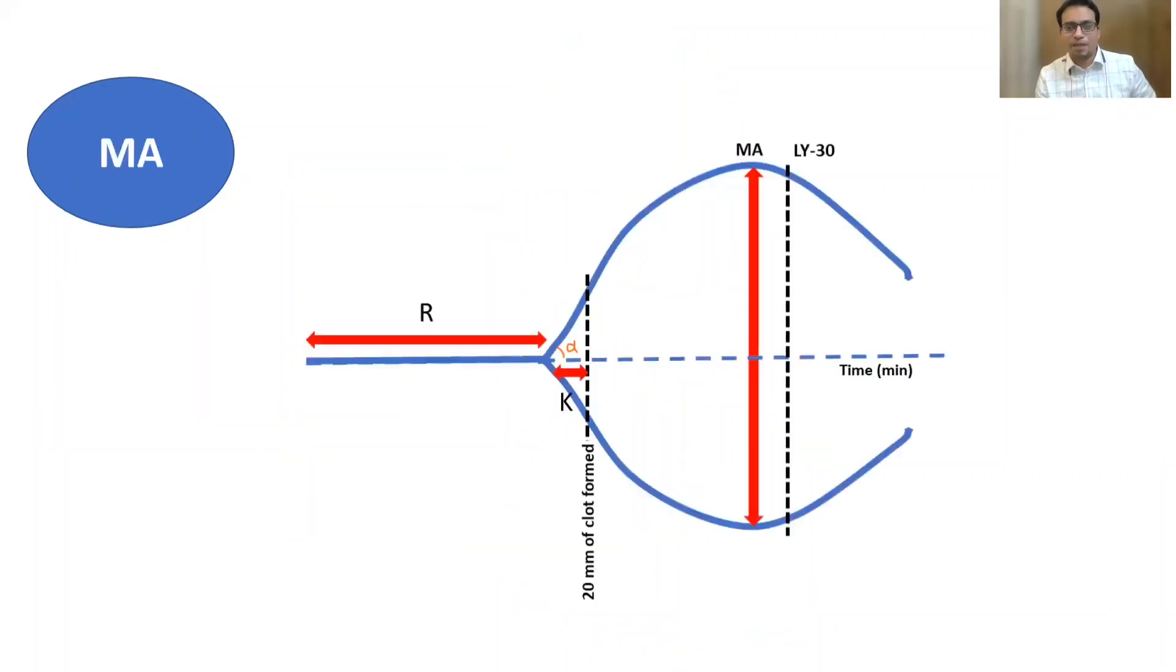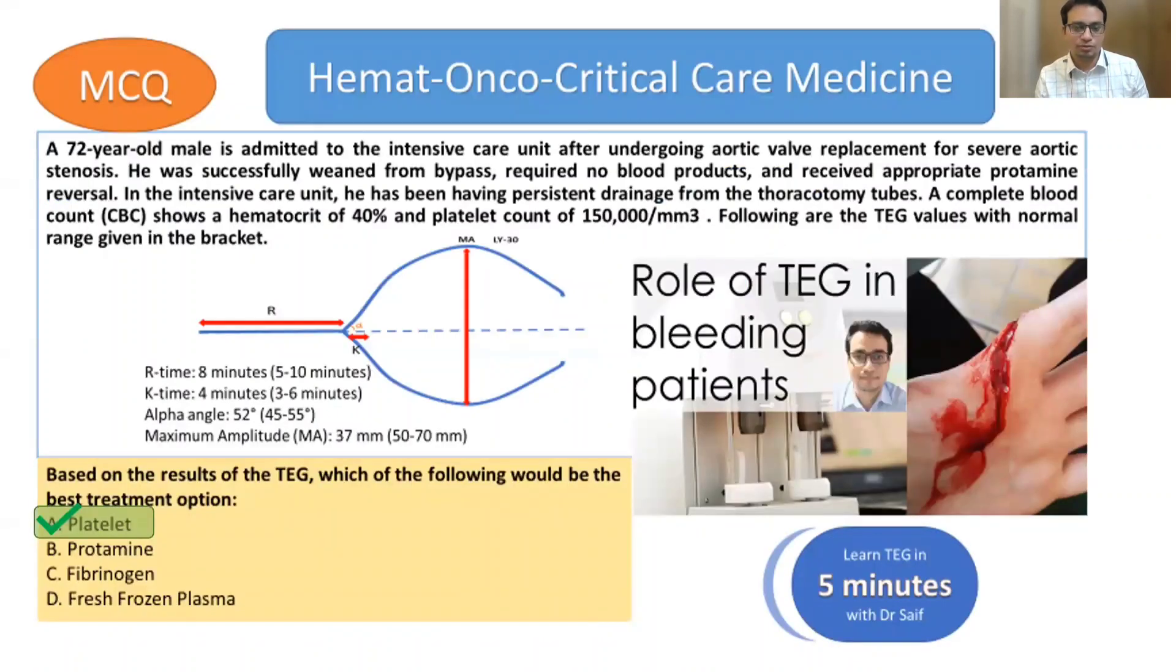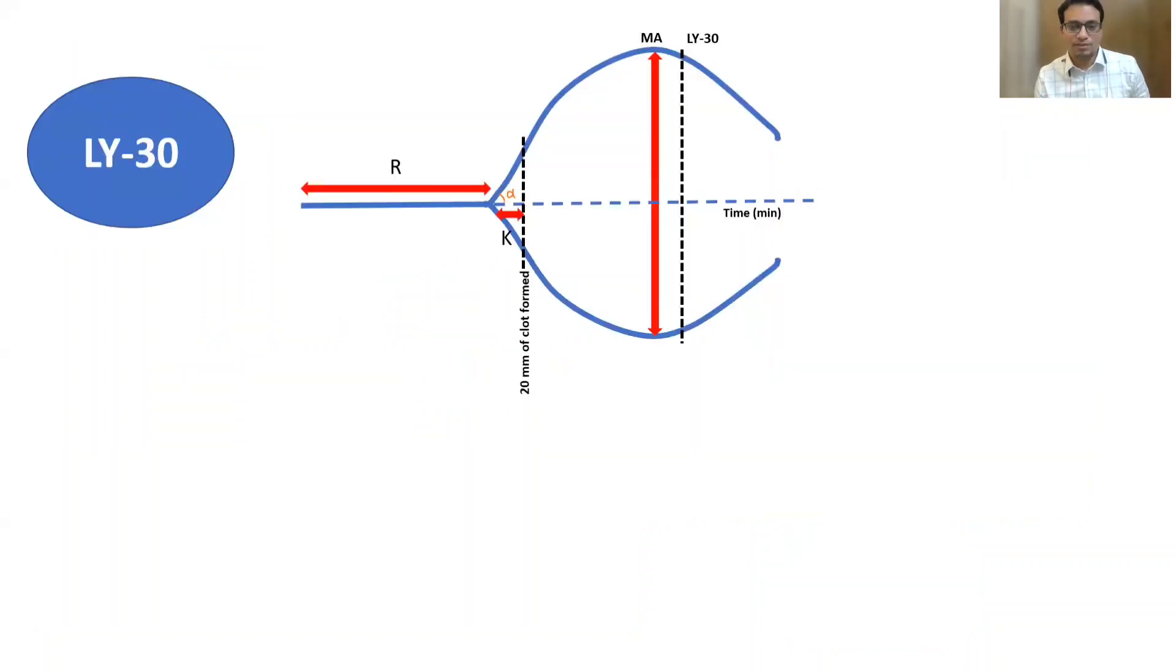MA is the surrogate for the platelet function. We should know that MA is the measure of clot thickness, the firmness of clot. The firmness of clot comes with the platelets. If the platelets are reduced in number or reduced in function, the MA will not be that much. Normal MA value is 50 to 70 millimeter. If it is less than 50 millimeter, that means there is deficiency of platelet number or reduction in platelet function. The answer to this question was basically the platelet because the MA was reduced in this case, so it was 37 millimeter.